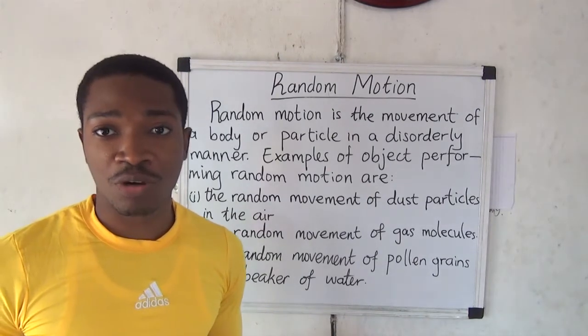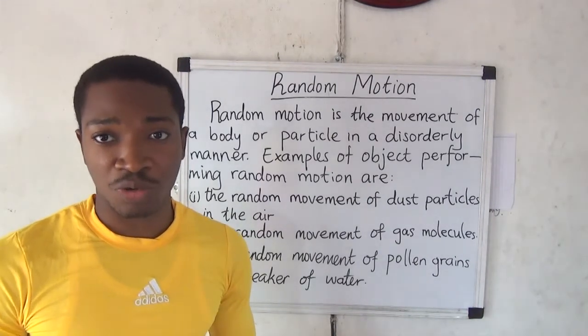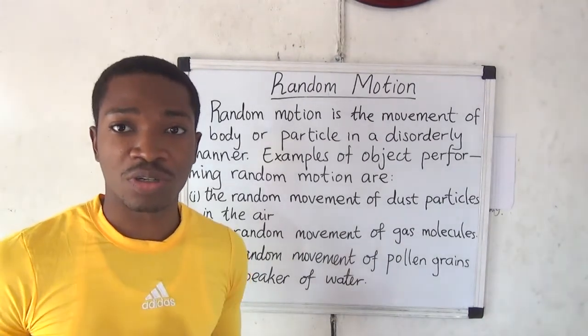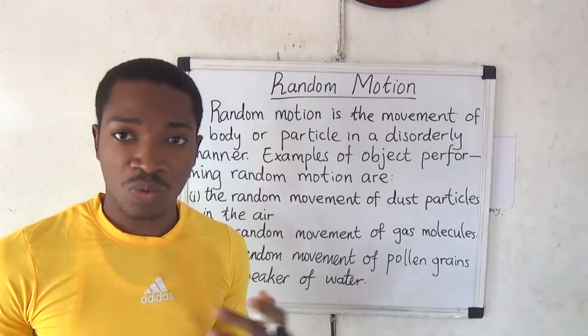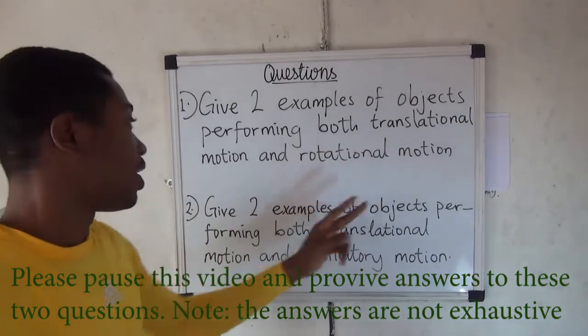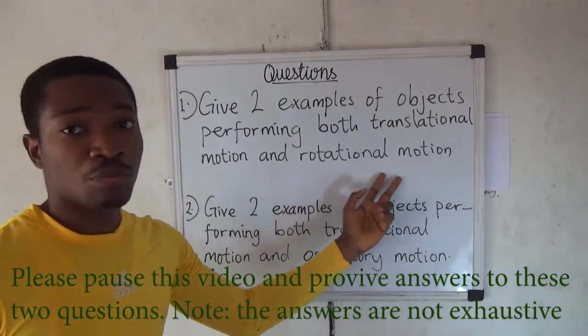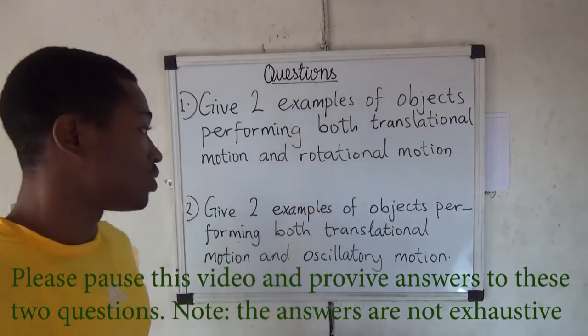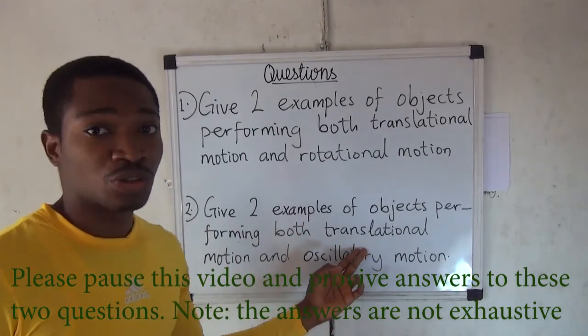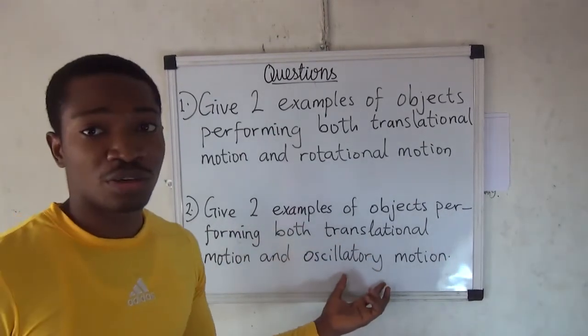A single object can combine two types of motion at the same time. You have to give two examples of objects performing both translational motion and rotational motion, and two examples of objects performing both translational motion and oscillatory motion.